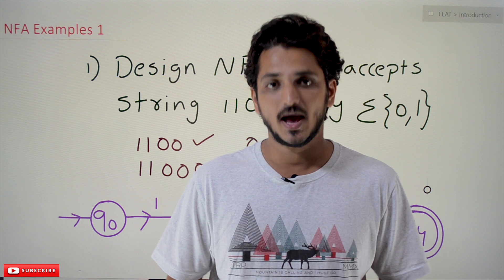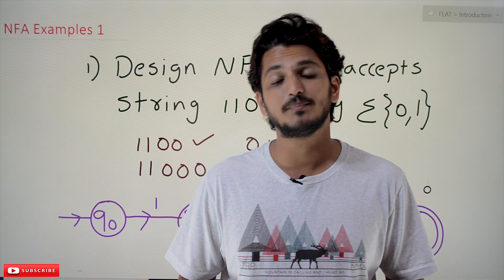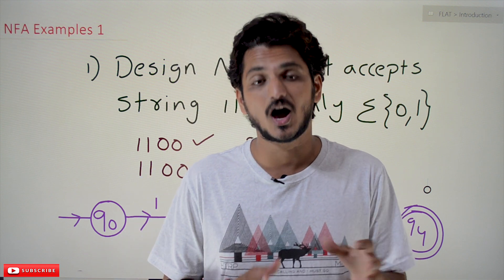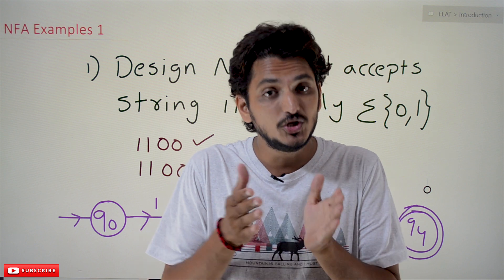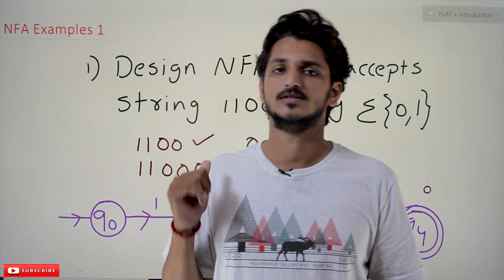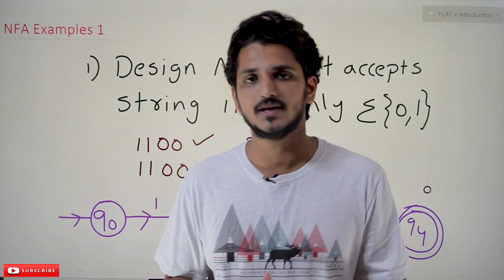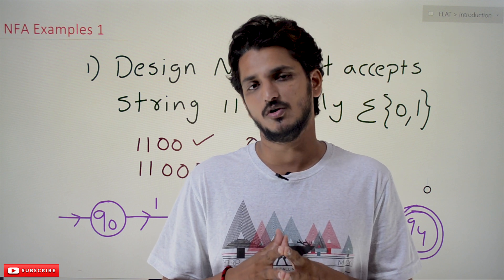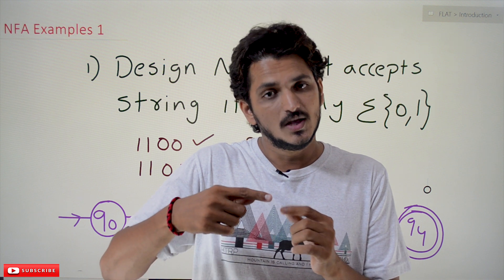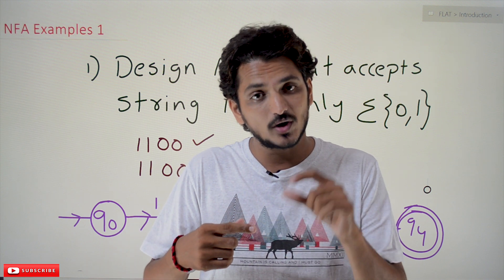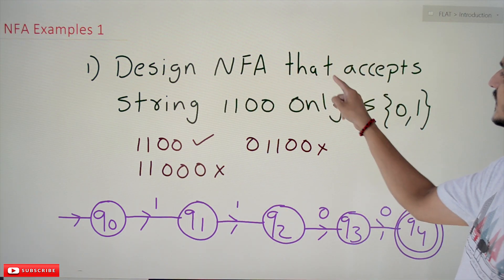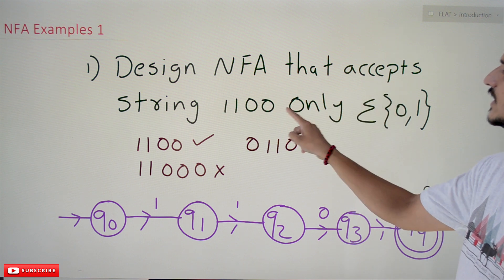Hi, welcome to Learning Monkey. I am Raghu. In this class we do some practice examples on NFA. In the previous class we already discussed what NFA is and how NFA is executed. That intuition about how NFA is executed is very important to understand this class, so please watch our previous class first. Coming to today's class, we have to design an NFA that accepts strings double one double zero only.